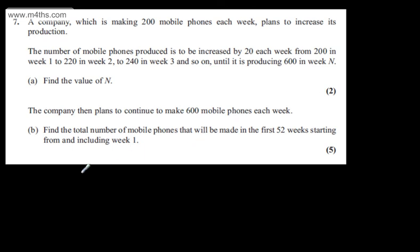The question carries two marks. If we consider now the first term A, that's going to be 200. The common difference D is going to be 20. So we have the information here. What I'm going to use is A sub N equals A plus N minus 1 times D. This will find us any term in an arithmetic sequence.